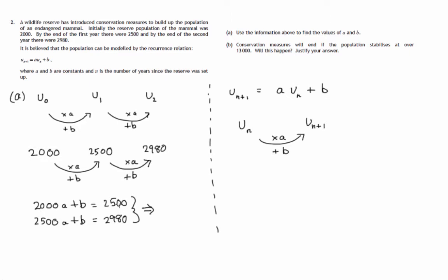Let's subtract the first equation from the second equation. 2,000A from 2,500A is 500A. B taken away from B is 0, the B's vanish. And 2,500 from 2,980 is 480. So let's divide both sides of this by 500. And if I double top and bottom, get 960 over 1,000. And therefore, as a decimal, A comes out to be 0.96.